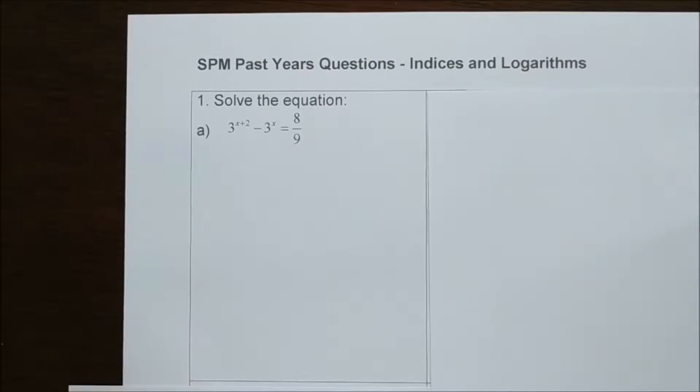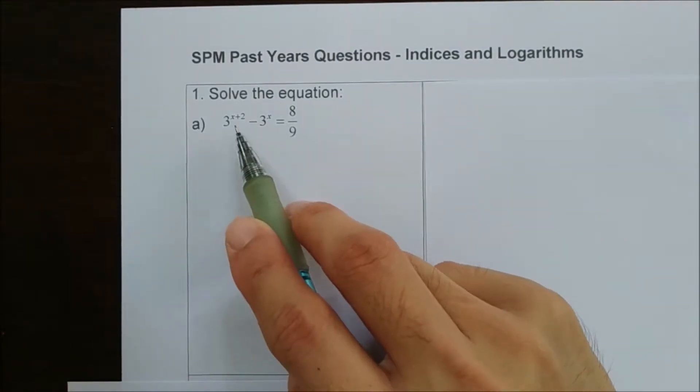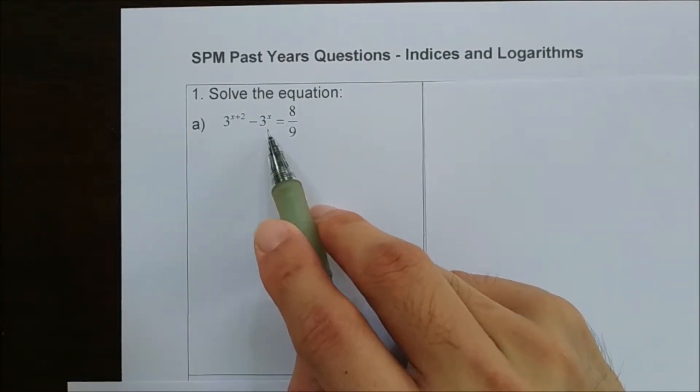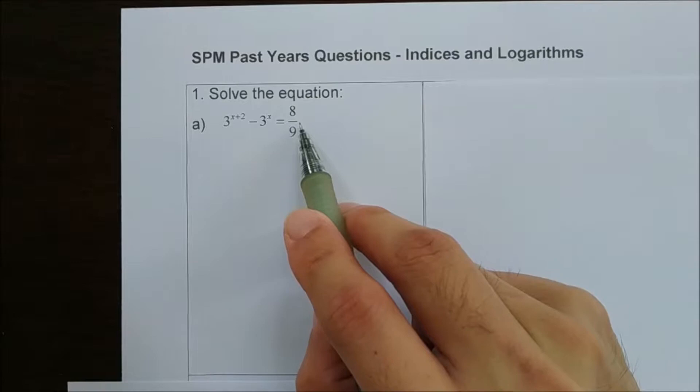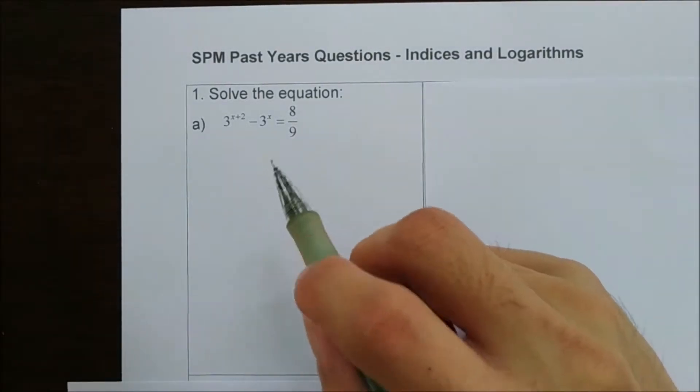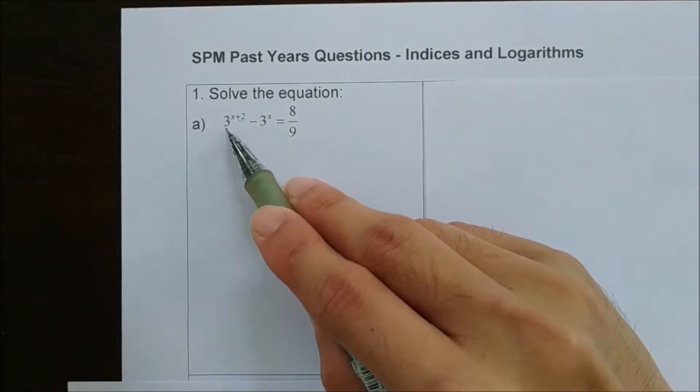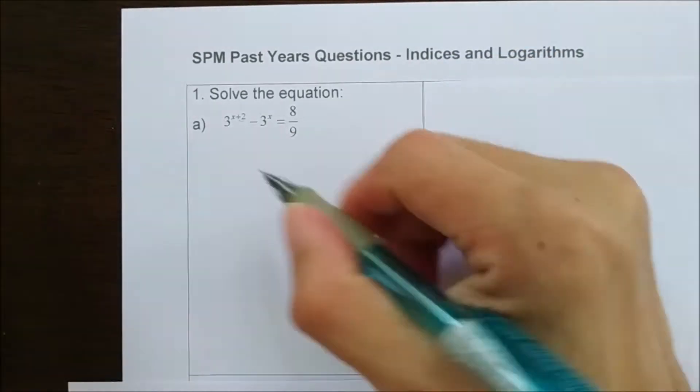We are going to try to solve a few past year questions. Question number 1, solve the equation 3 to the power of x plus 2 minus 3 to the power of x equals 8 over 9. For this type of question, we always try to get rid of the 2 here first by factorizing 3^x first.